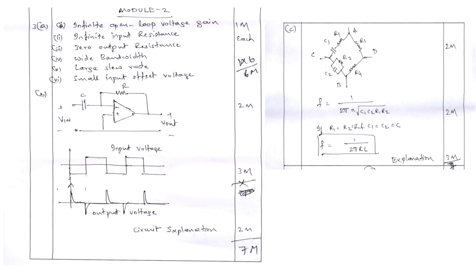For the ideal op-amp question, list and explain parameters such as infinite open loop voltage gain and infinite input resistance — each parameter carries one mark, totaling six marks. For the differentiator B question, draw the circuit diagram for two marks, show how the input voltage is transformed to the output through differentiation, explain the complete waveform formation for three marks, and the circuit explanation carries two marks — totaling seven marks.